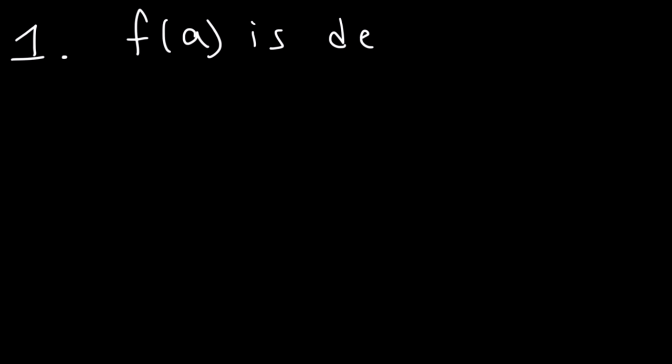How can we prove that a function is continuous at a certain point? There's something called the three-step continuity test. The first step is that you have to show that the function is defined at some point a — so f of a has to exist and equal a certain value.